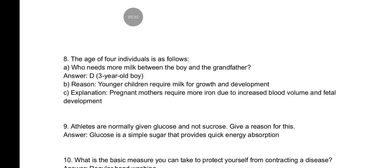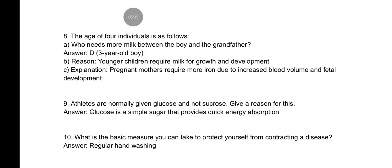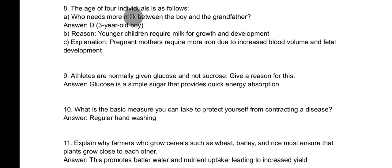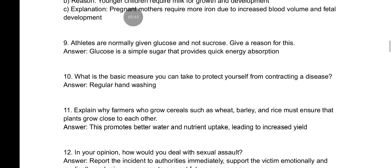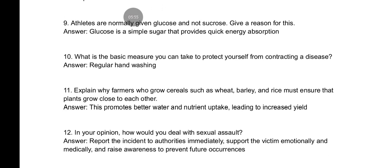The reason younger children require more milk is for growth and development. Pregnant mothers require more iron due to increased blood volume and fetal development. Others are normally given glucose, not phosphorus — the reason is that glucose is a simple sugar that provides quick energy absorption. Number ten: what is the basic measure you can take to protect yourself from contracting a disease? The answer is regular hand washing.